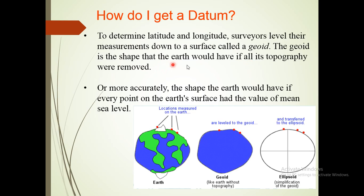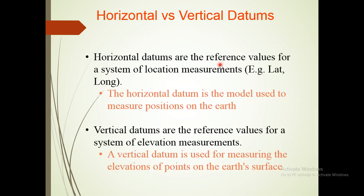The geoid represents the shape of the Earth. Horizontal datums are the reference value for systems of location measurement — latitude and longitude. The horizontal datum is the model used to measure position on the Earth. The vertical datum is used for elevation measurement.